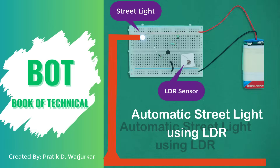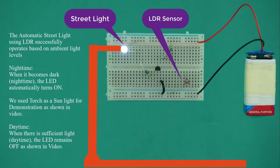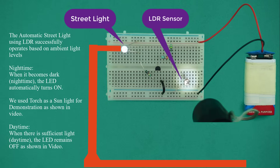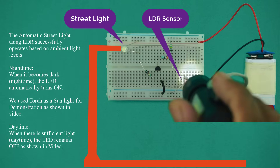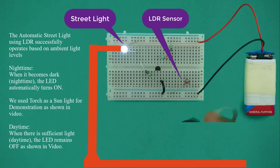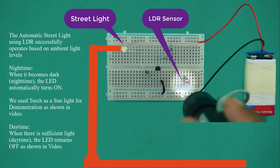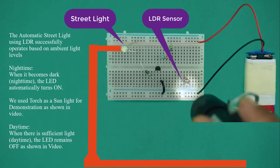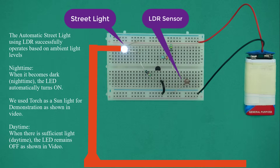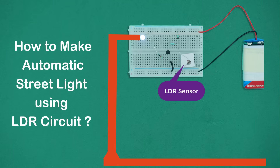How to make automatic street light using LDR on breadboard. The automatic street light, using LDR, successfully operates based on ambient light levels. Nighttime: when it becomes dark, the LED automatically turns on. We used a torch as sunlight for demonstration as shown in the video. Daytime: when there is sufficient light, the LED remains off as shown in the video.